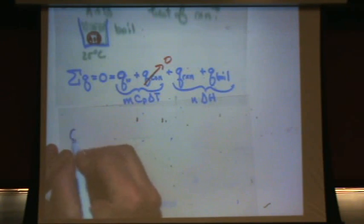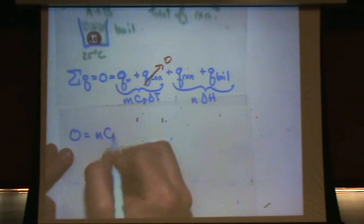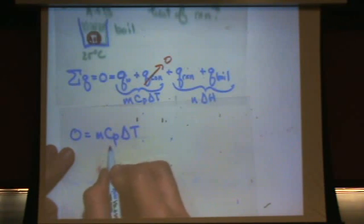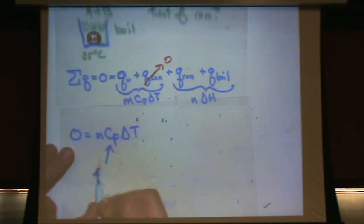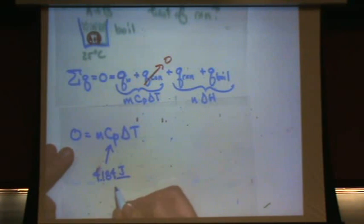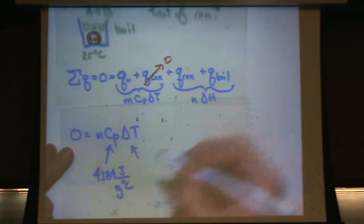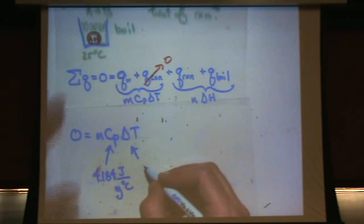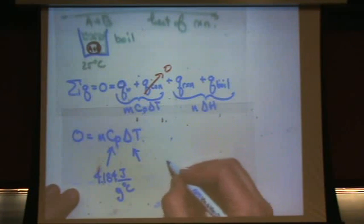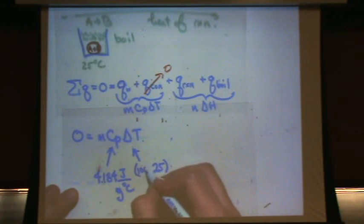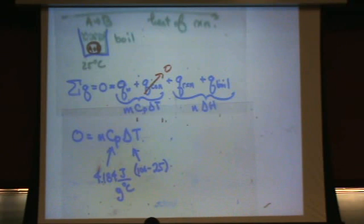So you have zero equals MCP delta T. CP this would be the specific heat of water. You'd look this up on the back of your test unless your instructor wants you to memorize this. So there's CP delta T. What would delta T be equal to? What's the T initial? 25. What's T final? 100 - warm it up to boil.